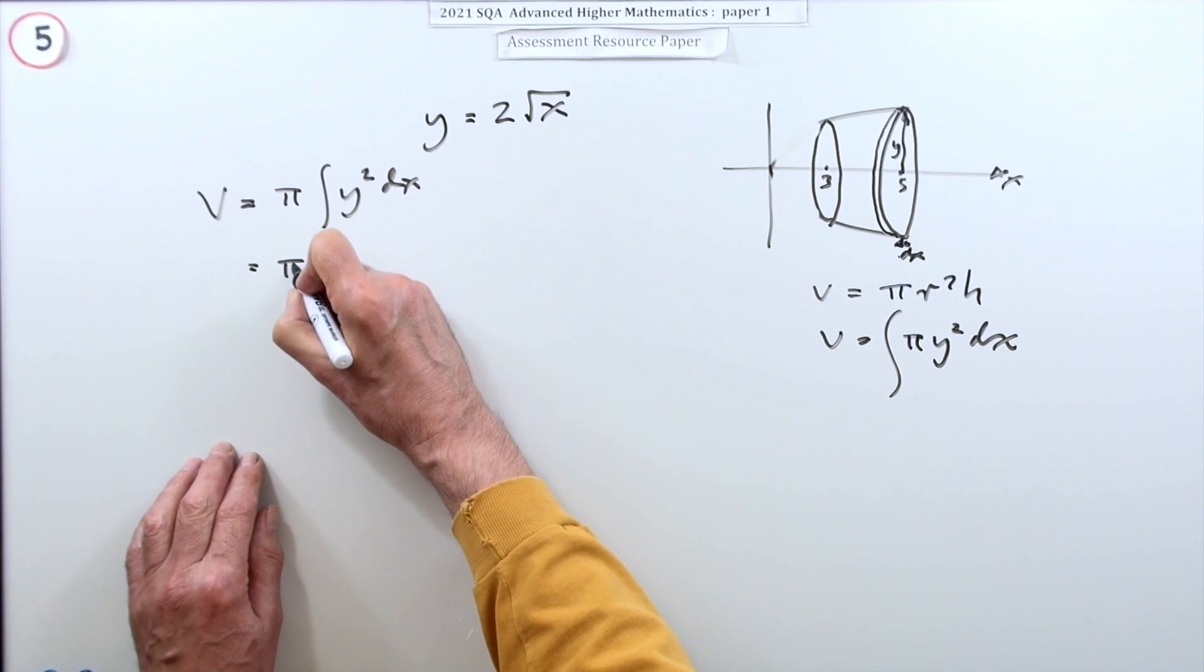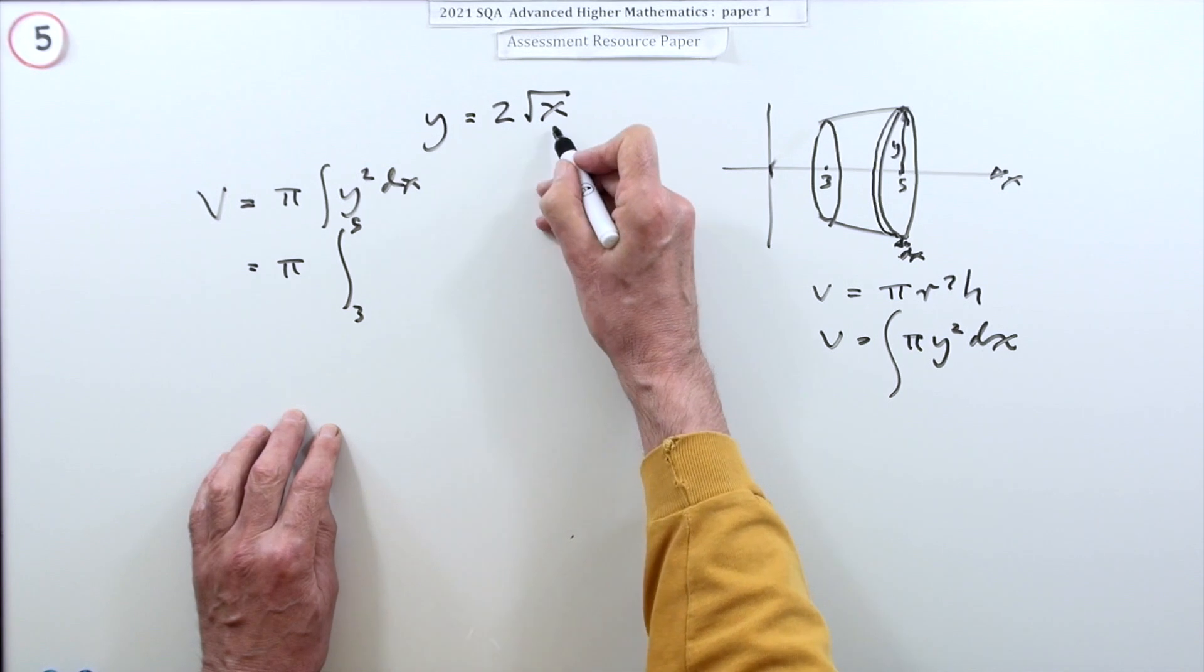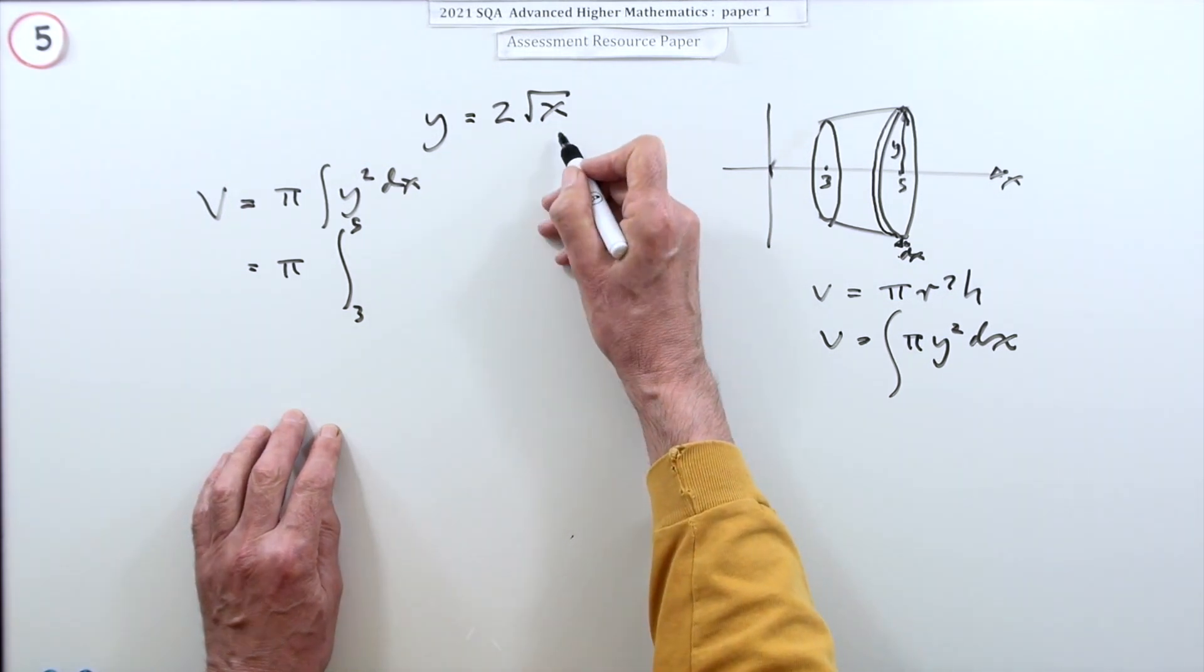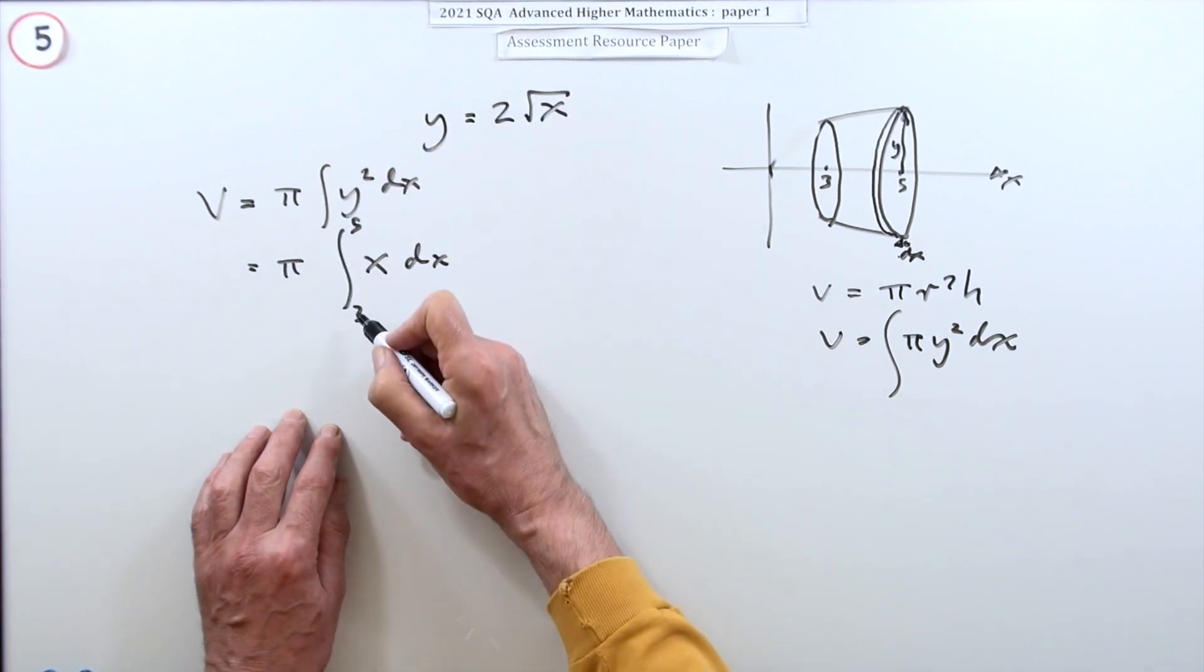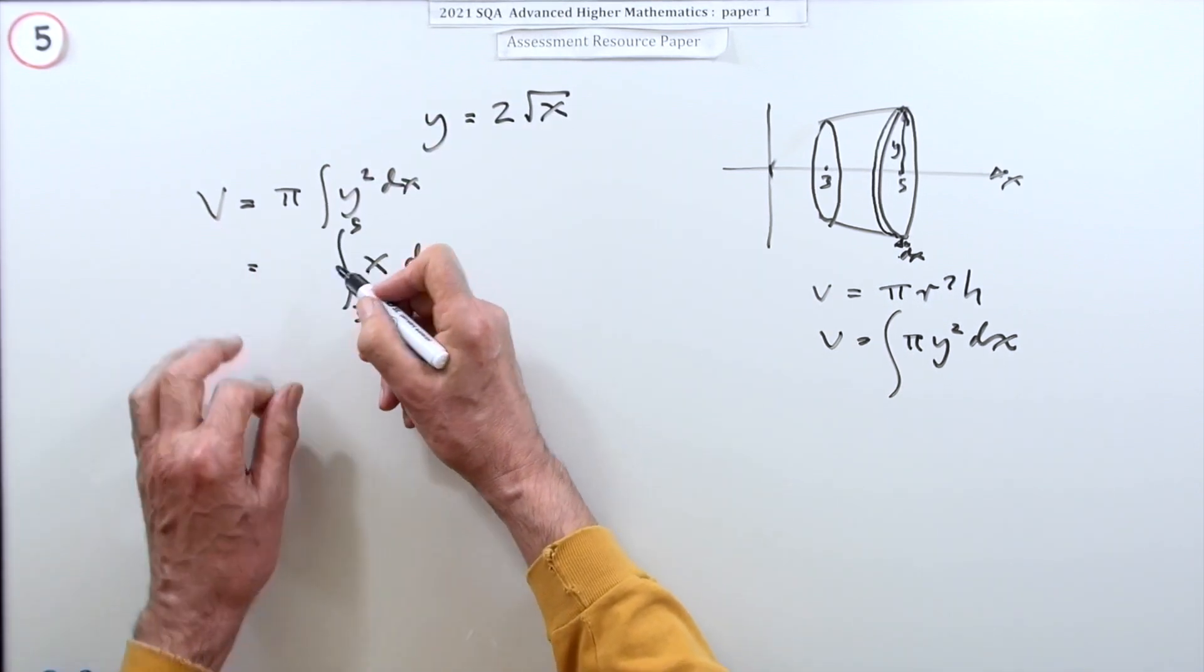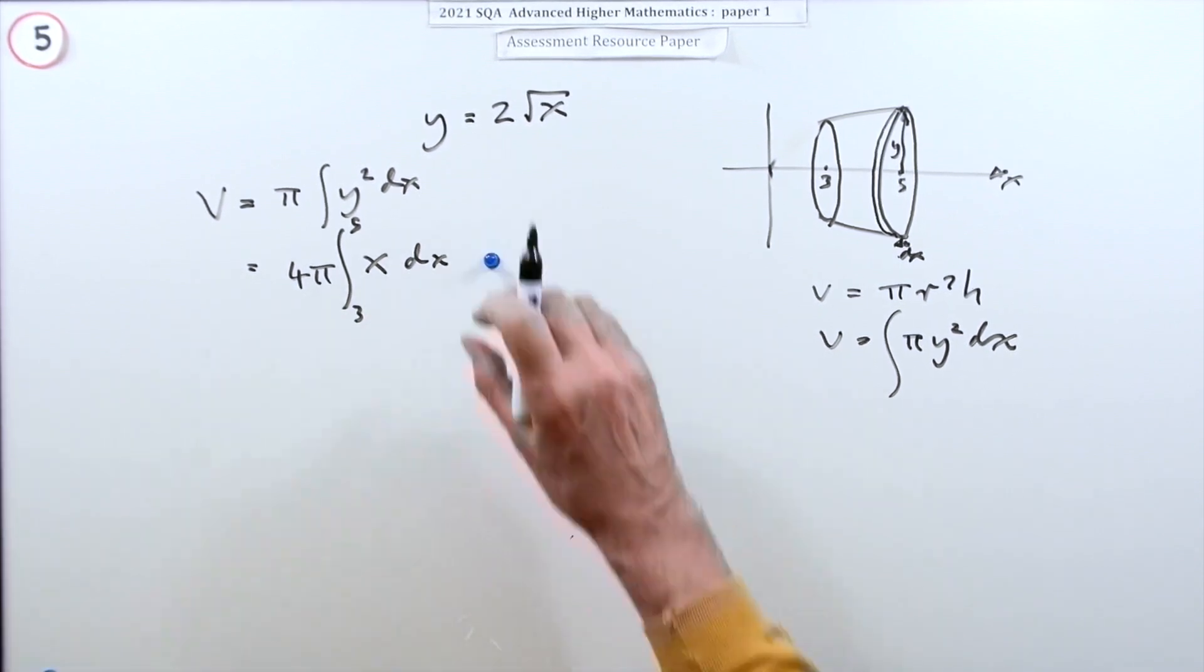So putting in the specific figures then, it was from three to five. If y is two root x, then squaring it will be four x, so I'll just put the x here and the four can come out and join the pi. That's the calculation, that's the first mark. Pi y squared dx from three to five.